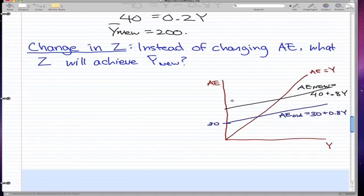So, what would happen if we made a change to Z? And remember, when we change Z, what happens is the line doesn't shift, it pivots on 30. So, let's work that out right now.